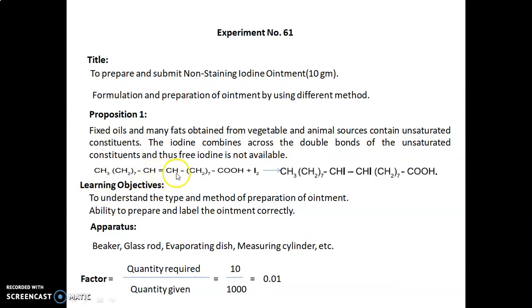That is CH3-CH2 seven times CH double bond CH-CH2-COOH plus I2 (iodine) reacts with this and we get CH3-CH2 seven times CHI-CHI-CH2 seven times COOH. Learning objectives are to understand the type and method of preparation of ointment and ability to prepare and label the ointment correctly.